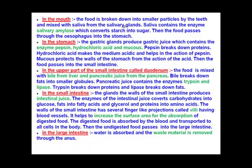Digestion starts in the mouth. Whatever food we take is first converted into smaller particles by the action of our teeth. The salivary glands secrete saliva which mixes with the food particles and helps break them down. Saliva contains an enzyme called salivary amylase, which converts the complex starch present in our food into simple sugars.